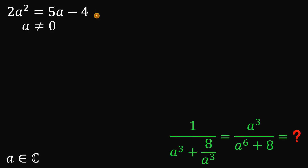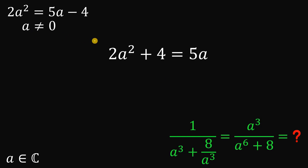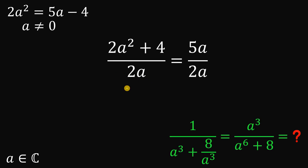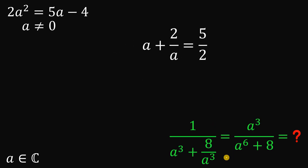Now let's focus on the equation 2a² = 5a - 4. We add 4 to both sides, and since a ≠ 0, we divide all terms by 2a. Simplifying, the left side becomes a + 2/a, and the right side is 5/2. So we have: a + 2/a = 5/2.